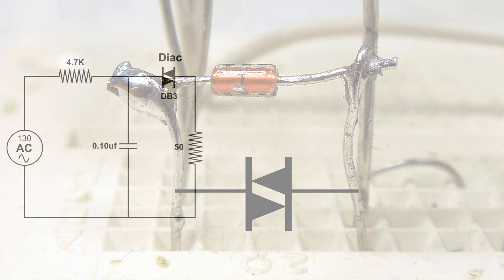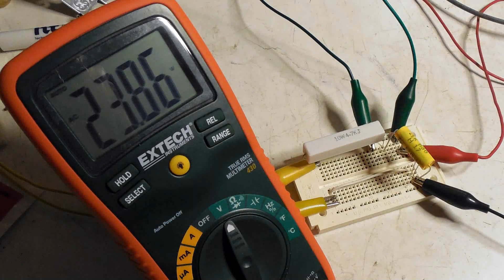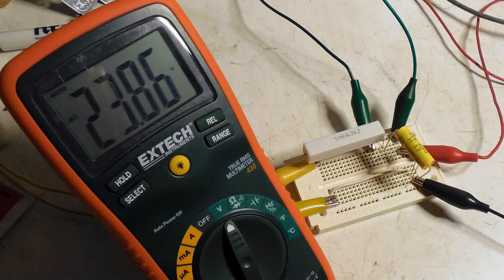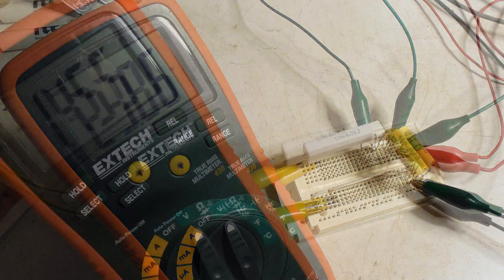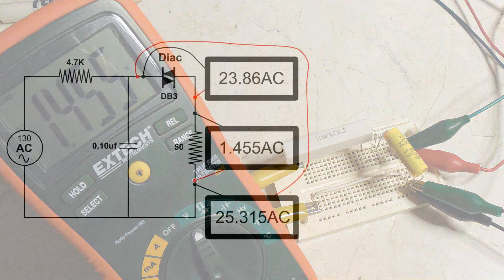And this is the symbol for a DIAC, and this is the wiring diagram of this circuit. I did take some measurements, AC measurements, across some of the components, and this is the results.